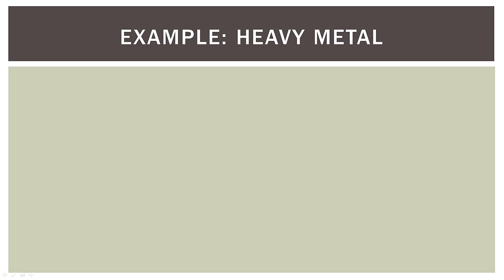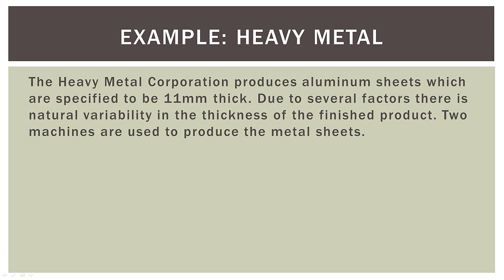So our first example is called heavy metal. So the heavy metal corporation produces aluminum sheets which are specified to be exactly 11 millimeters thick. Now due to several factors, there is natural variability in the thickness of the finished product. Two machines are used to produce the metal sheets.